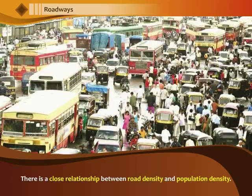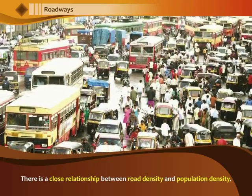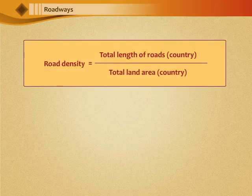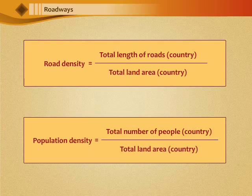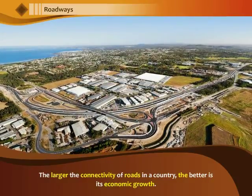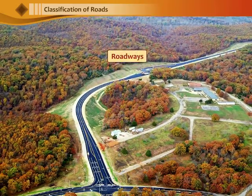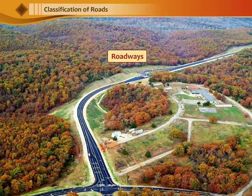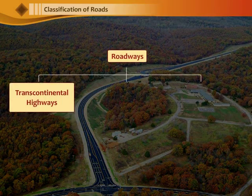There is a close relationship between road density and population density. Road density refers to the ratio between total length of roads in a country to its total land area. The larger the connectivity of roads in a country, the better is its economic growth. Roadways are classified into three categories, namely transcontinental highways, national highways and local roads.